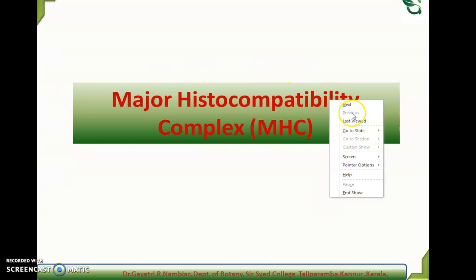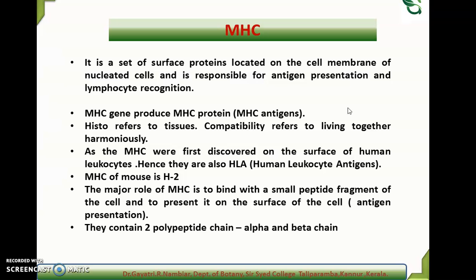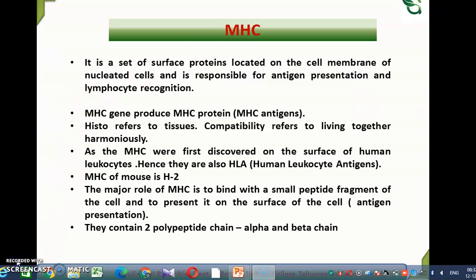Major Histocompatibility Complex is a set of surface proteins located on the cell membrane of nucleated cells and is responsible for antigen presentation and lymphocyte recognition. MHC genes produce MHC proteins or MHC antigens. Histo refers to tissues and compatibility refers to living together harmoniously. As MHC were first discovered on the surface of human leukocytes, they are also known as HLA or Human Leukocyte Antigen. Besides human beings, it was also discovered in mouse, and in mouse MHC is known as H2.